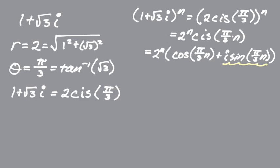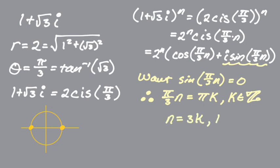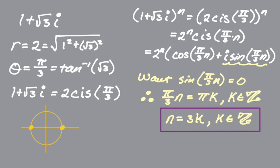What I need is sin(nπ/3) = 0. I'll think about the unit circle to solve that — sine is zero at 0 and at π. So I need nπ/3 = πk, where k is an element of the integers. Multiplying both sides by 3/π gives n = 3k, where k ∈ ℤ. And that solves the problem. I hope this was helpful — good luck.